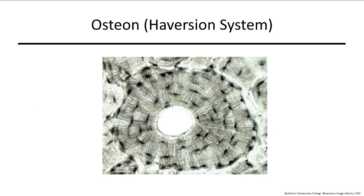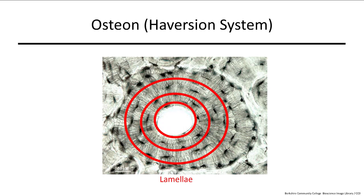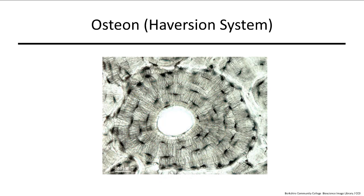Let's review the features and functions of an osteon. First, the central canal for blood vessels. Lamellae are the successively larger rings of calcium and collagen. Lacunae are the black oval spots between lamellae where osteocytes are found. Canaliculi are the tiny black lines radiating out from each lacuna, bringing nutrients to the osteocytes inside.